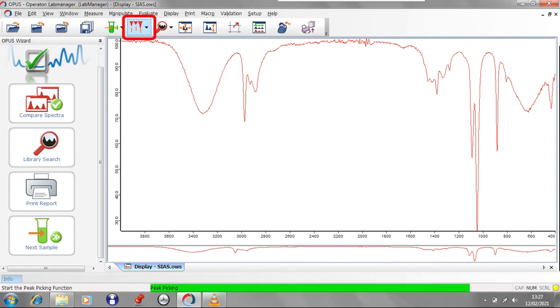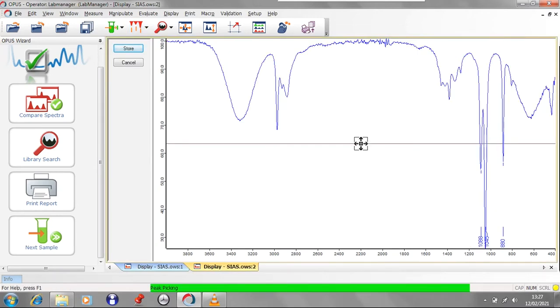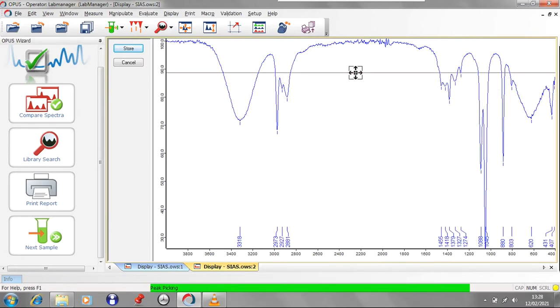Once you have your spectrum, peak picking is performed to give the wave number of each peak by clicking on the peak picking icon as shown here. You can make the system automatically calculate the most prominent peaks, or you can use the drop-down menu for interactive peak picking. This will give you a horizontal line to allow you to choose the transmittance below which to measure the wave number.